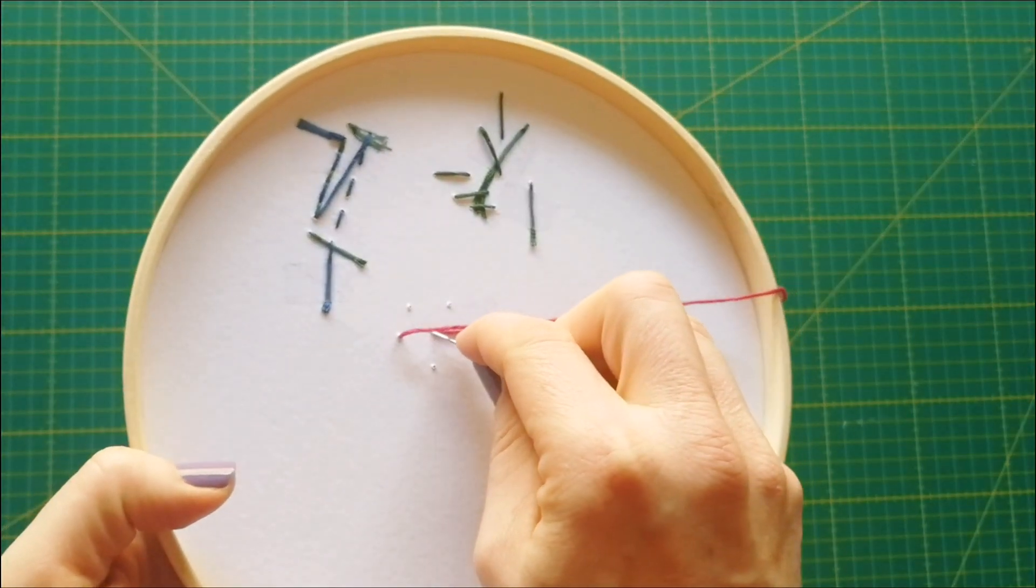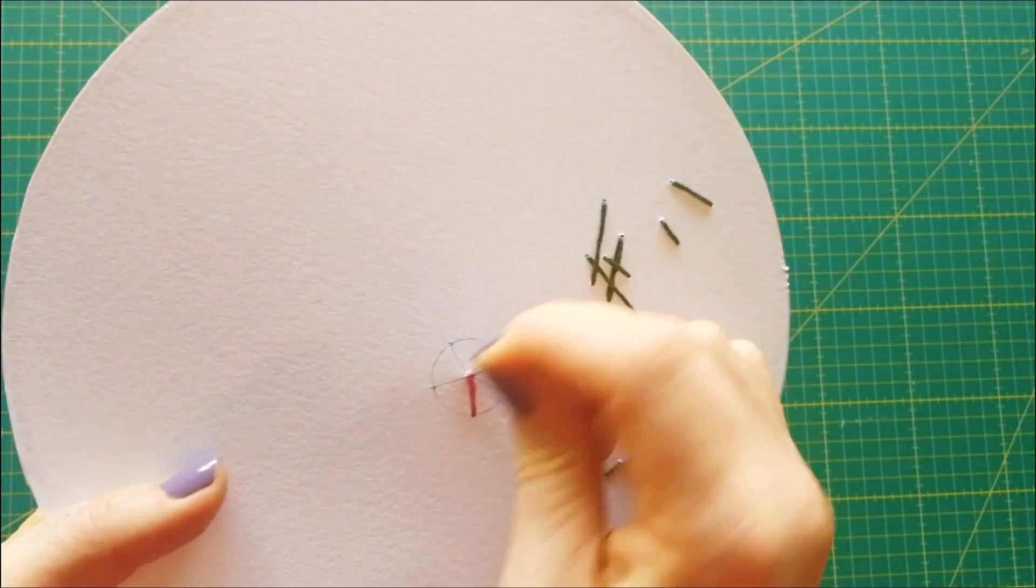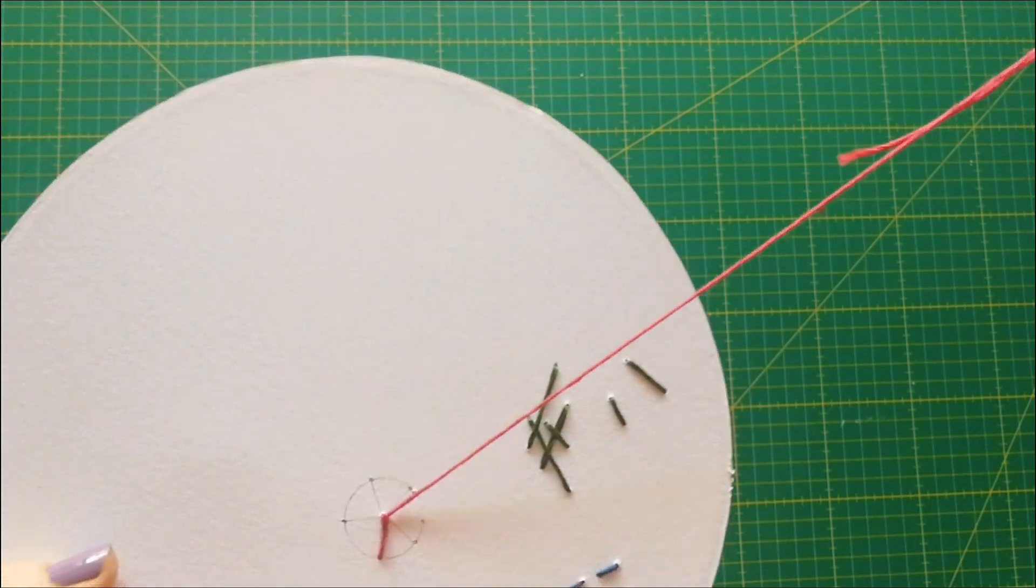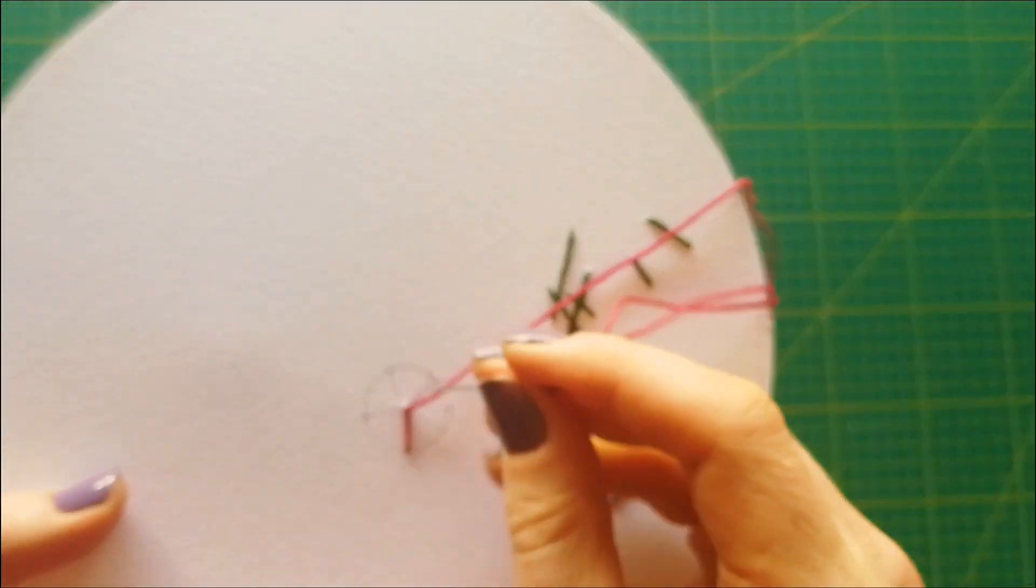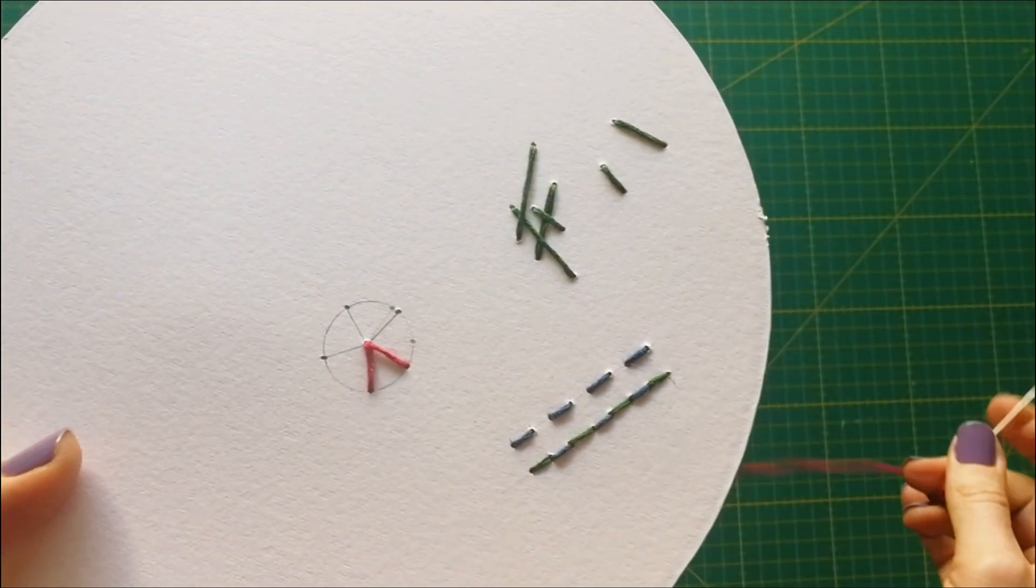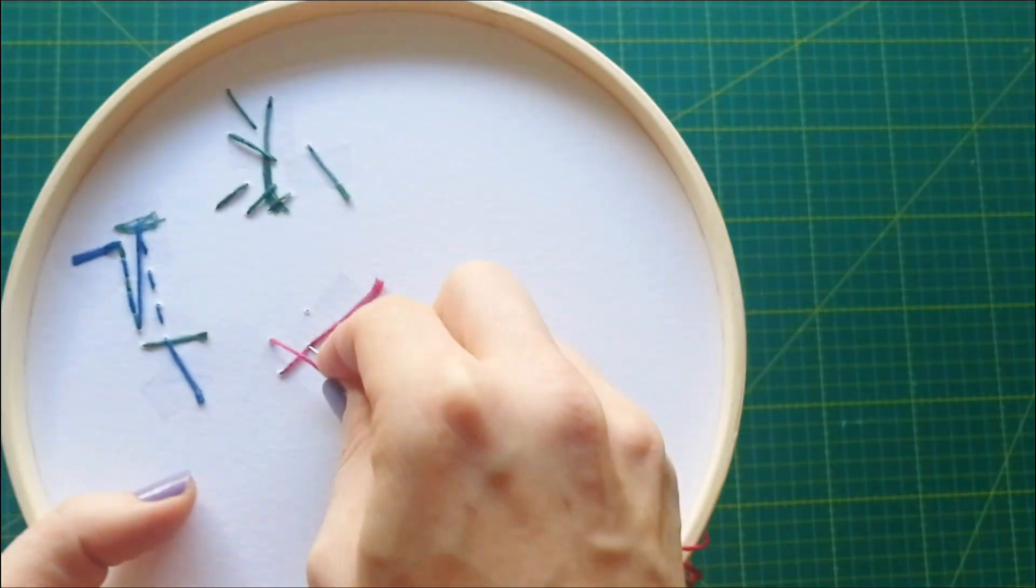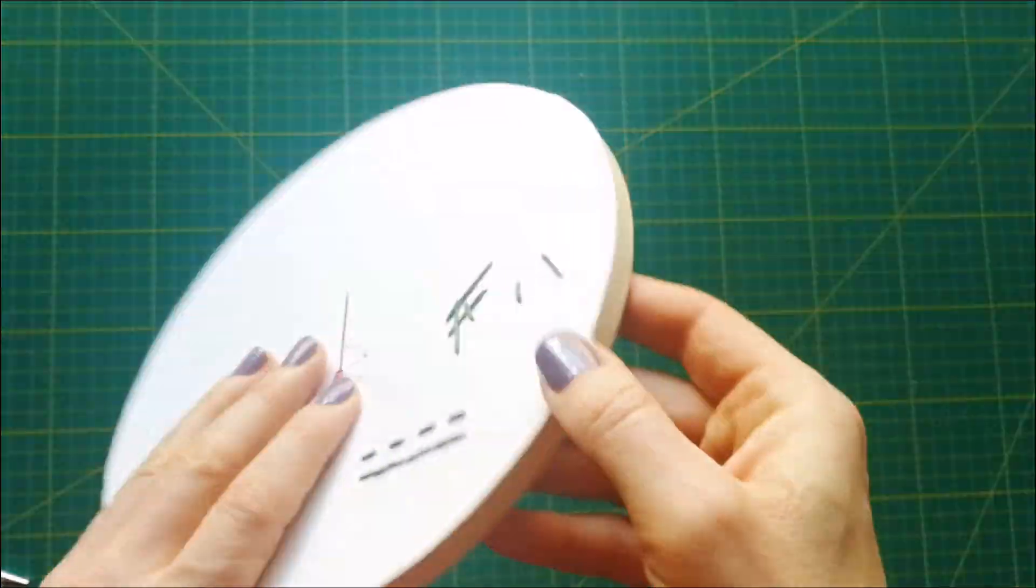We will first create 5 legs that will present a frame for creating a rose pattern. Please make sure that you pull the legs firmly because they will be the base for our pattern.